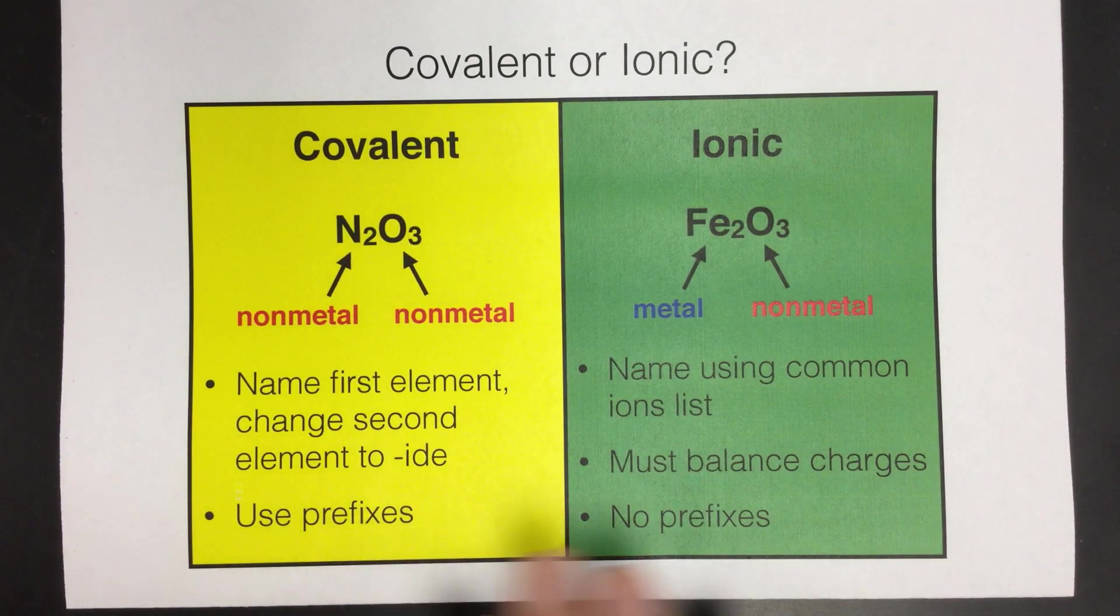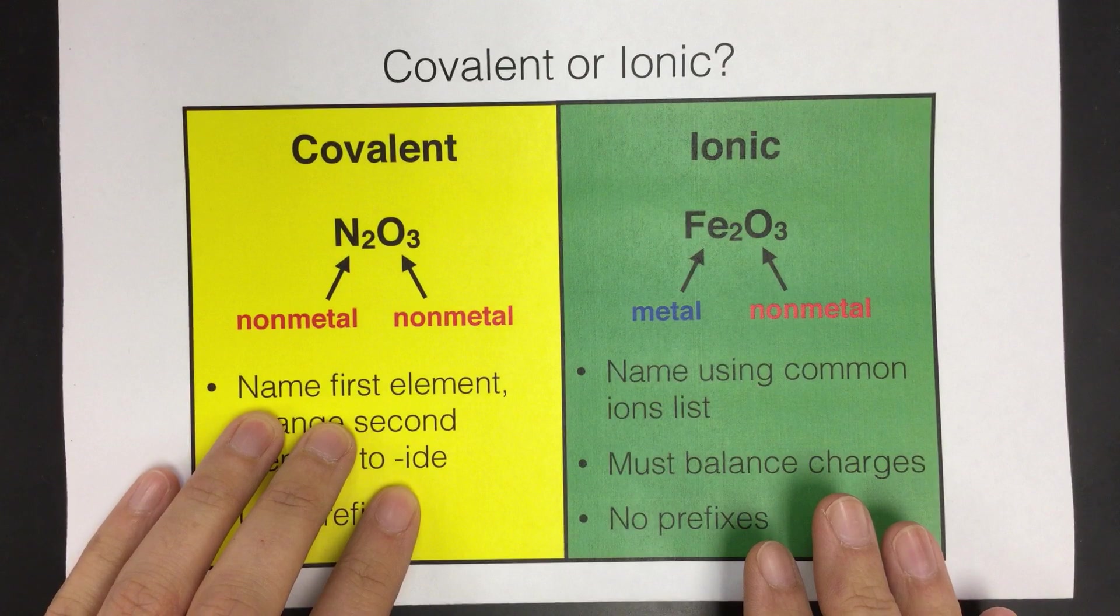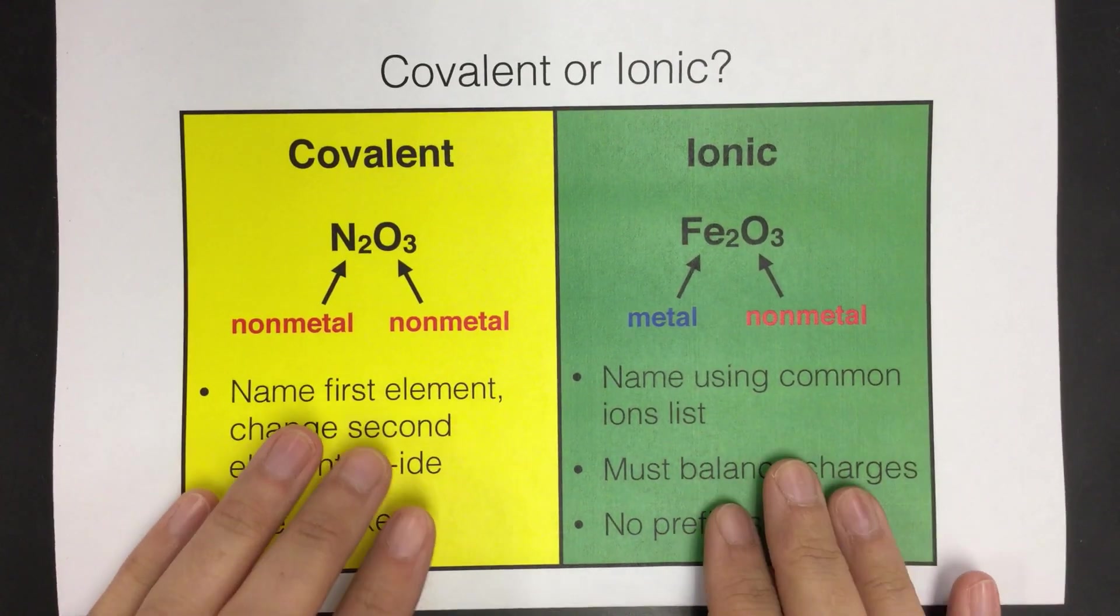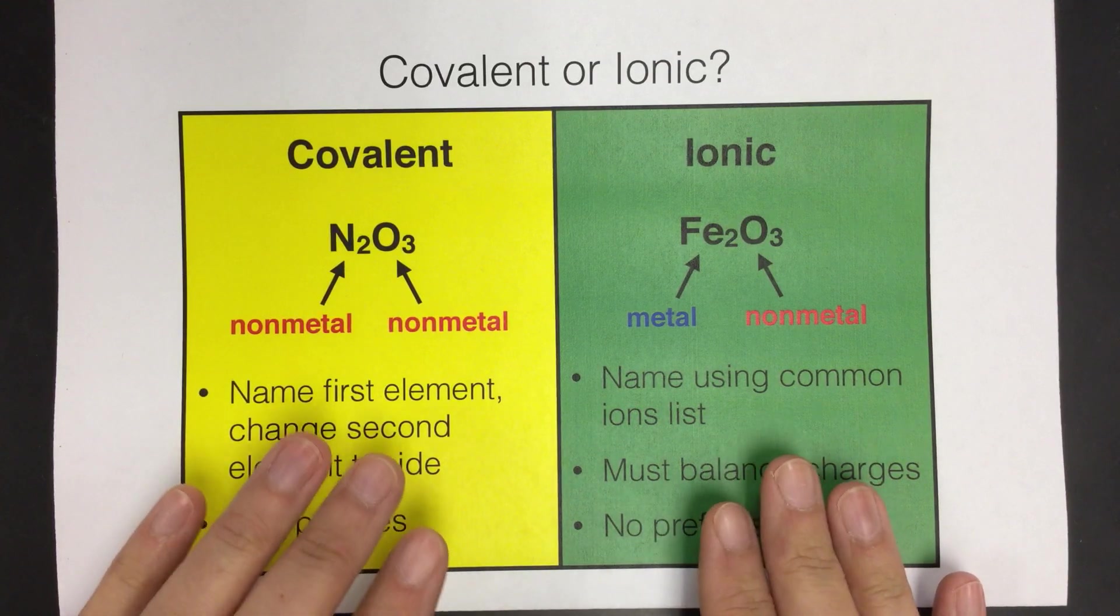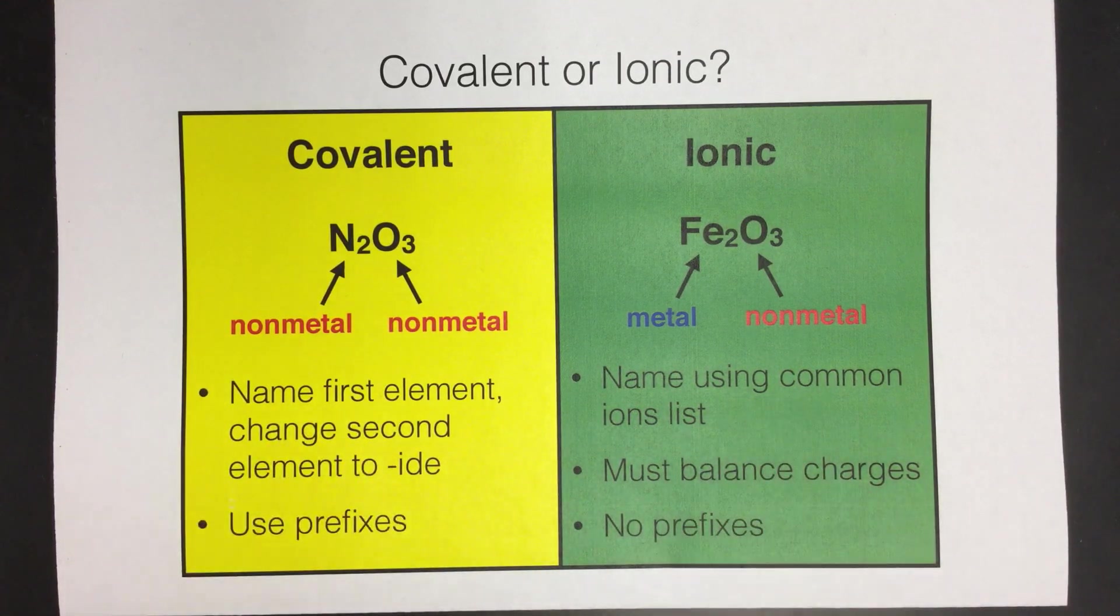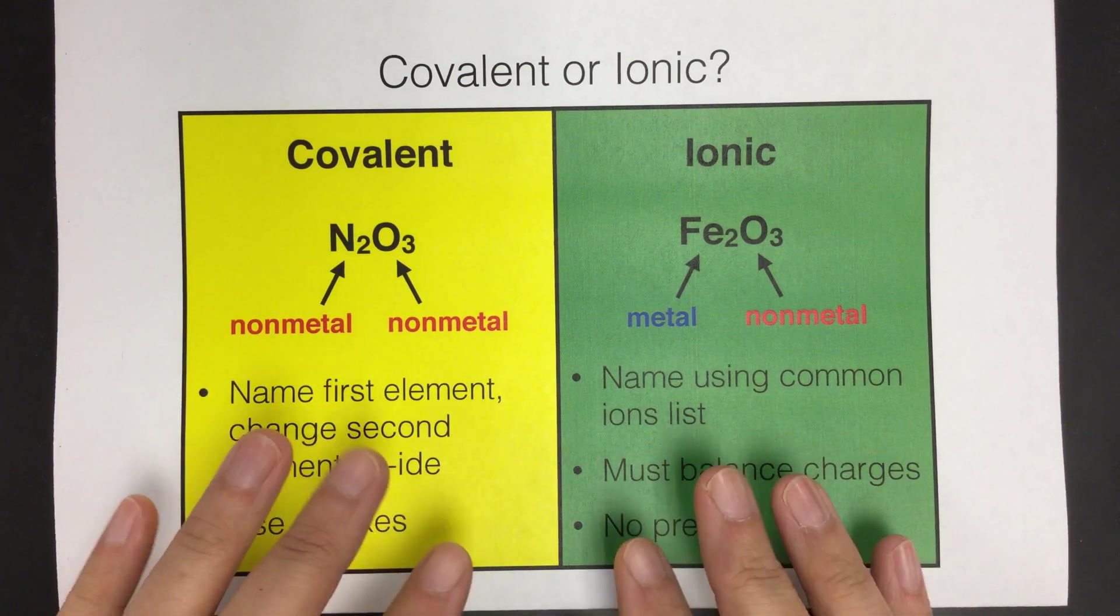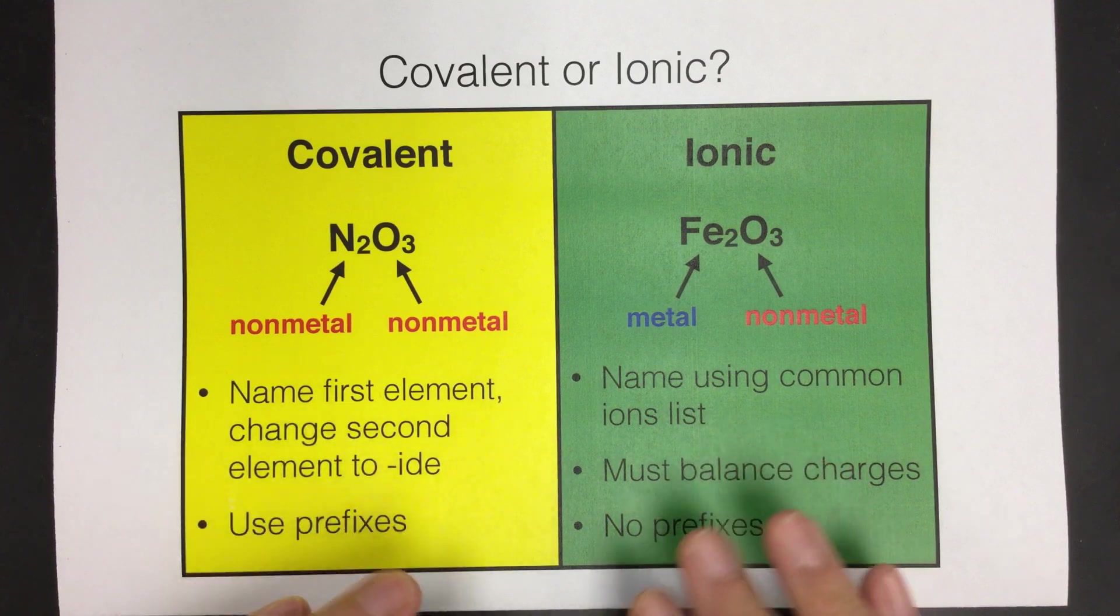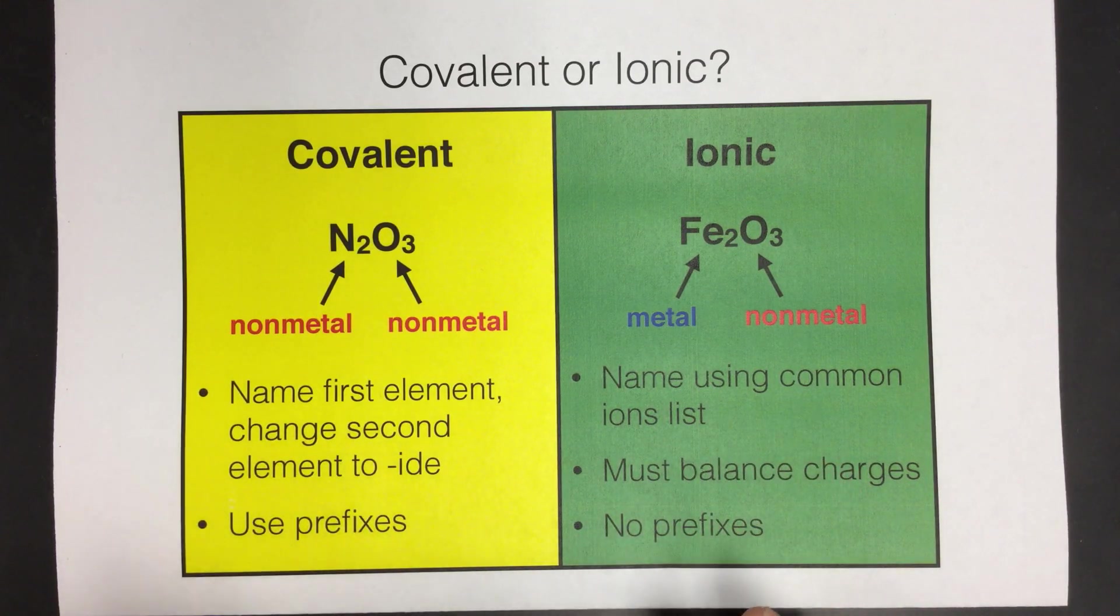All right, the purpose of this video is to go over the difference between an ionic compound and a covalent compound, because we learned different naming rules and how to write the formulas and names for both of these types of compounds. So you want to be able to tell the difference between them. It's pretty easy, but you just have to get used to asking yourself a couple questions before you go right into naming something.